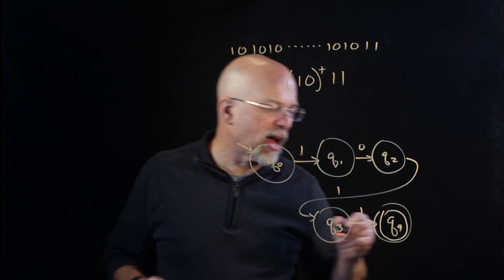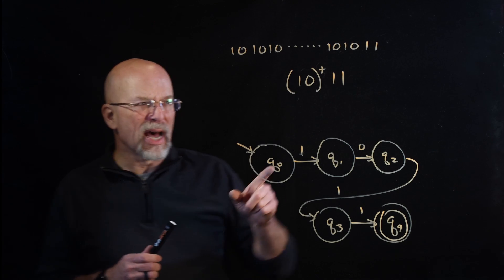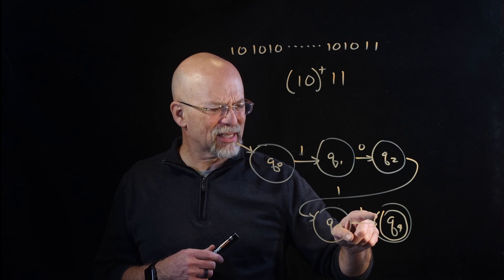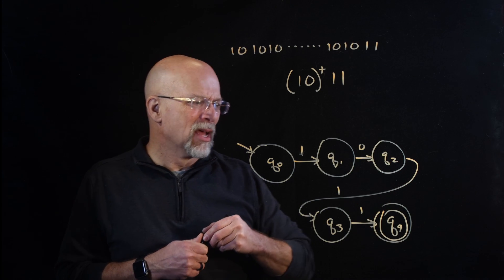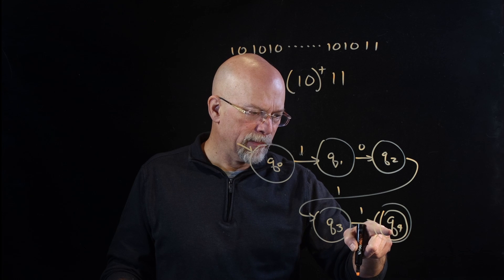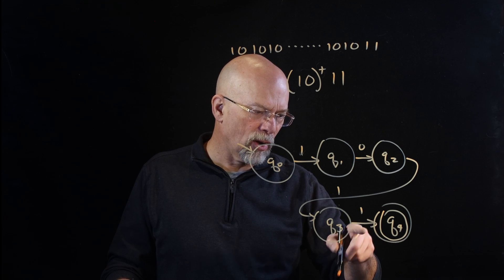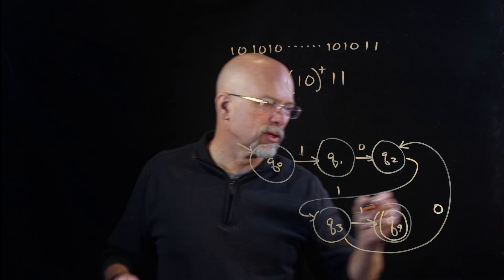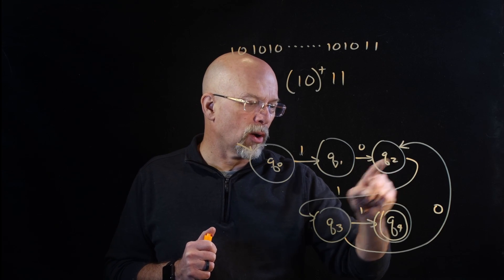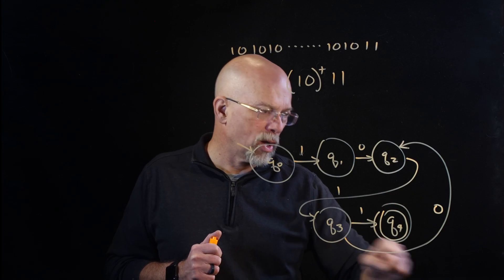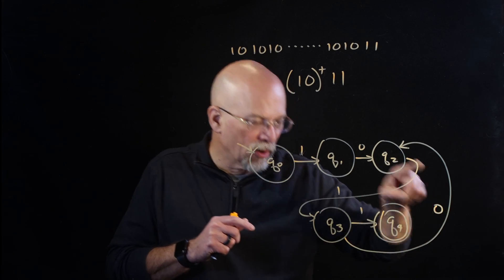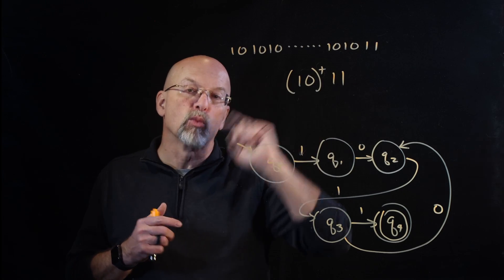But what if we receive more 1-0 pairs — like 1, 0, 1, 0? In that case we're not done yet. If instead of the second 1 we receive a 0, we can come back with a 0 transition, creating a loop. This allows us to handle sequences like 1-0-1-0-1-0-1-1, where the loop on the intermediate state lets us accumulate more than just the minimum single 1-0 pair before the final 1-1.